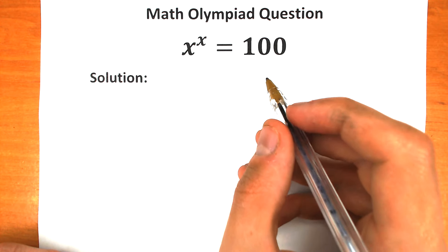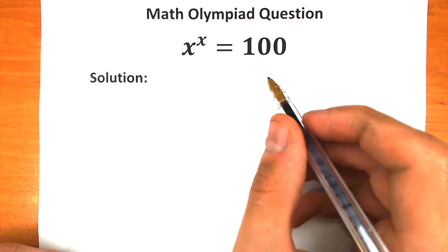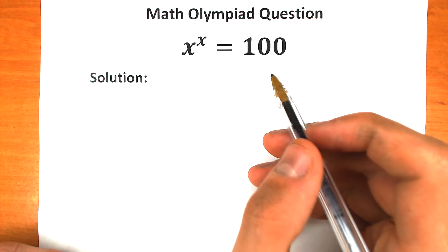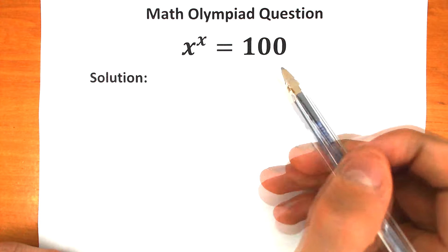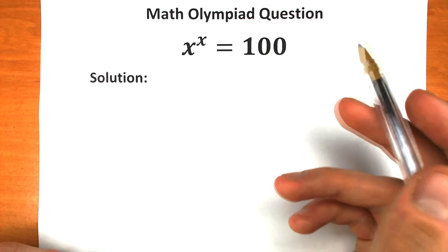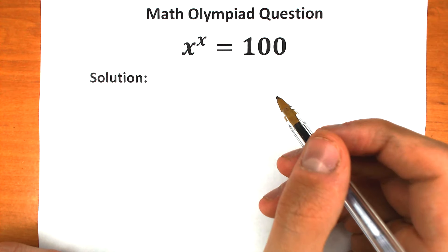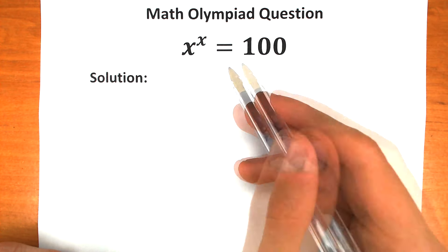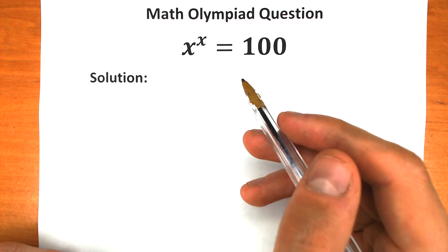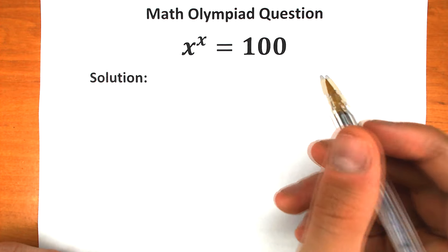Welcome back to my channel, Higher Mathematics. We have a really interesting Olympiad question today: x to the x equals 100. What is the correct answer? In this video I'm going to fully explain how to solve it correctly, step by step.